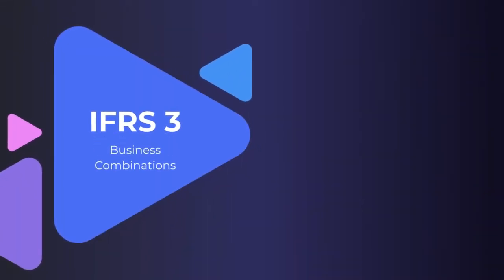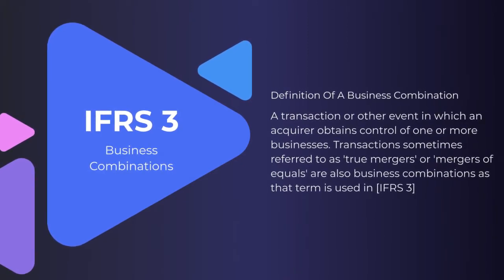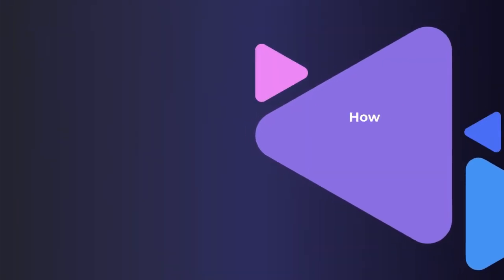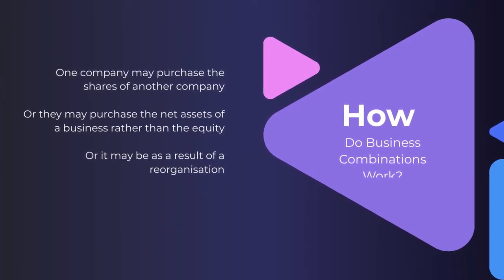In order to fully understand how to consolidate a set of financial statements, we need to understand IFRS 3, which covers business combinations. IFRS 3 defines a business combination as a transaction or other event in which an acquirer obtains control of one or more businesses — sometimes referred to as true mergers or mergers of equals. A business combination might involve one company purchasing the shares of another, purchasing the net assets of a business rather than the equity, or it might result from a reorganization.